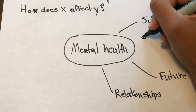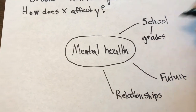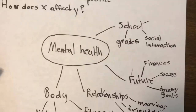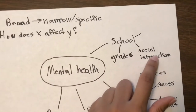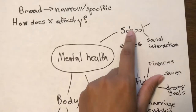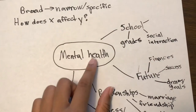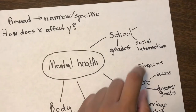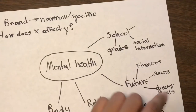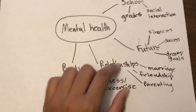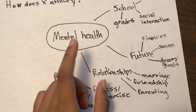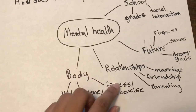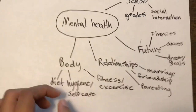Maybe grades — that's one component of school. What's another component of school? You might also have social interaction. Grades and social interaction are the two main things I can think of in school. You might be able to think of more. We could also look at mental health and someone's future — maybe their finances, maybe their success, maybe their dreams and their goals. We could look at relationships: how does mental health affect marriage, friendship, parenting? How does mental health relate to their body — fitness, exercise, hygiene, self-care, diet?